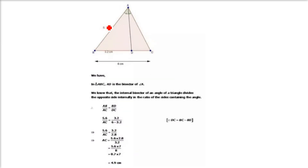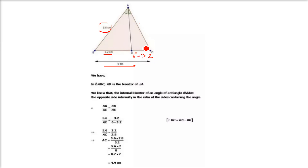Next: AB is 5.6, AC is not known, BC is 6, and BD is 3.2, so DC equals 6 minus 3.2 equals 2.8. Now 5.6 by AC equals 3.2 by 2.8, so AC equals 5.6 × 2.8 ÷ 3.2, which is 4.9.